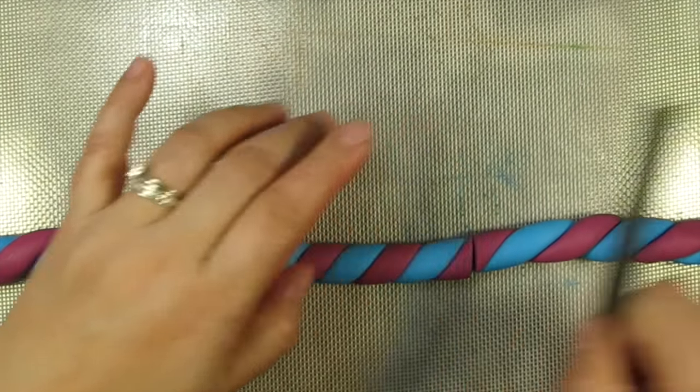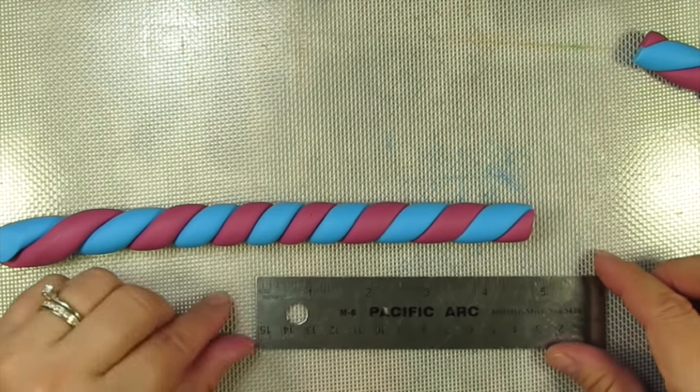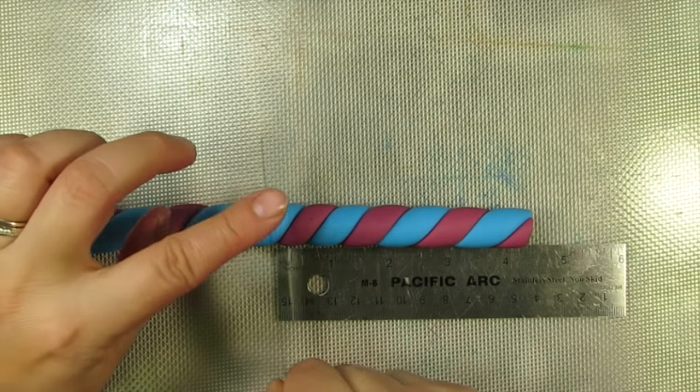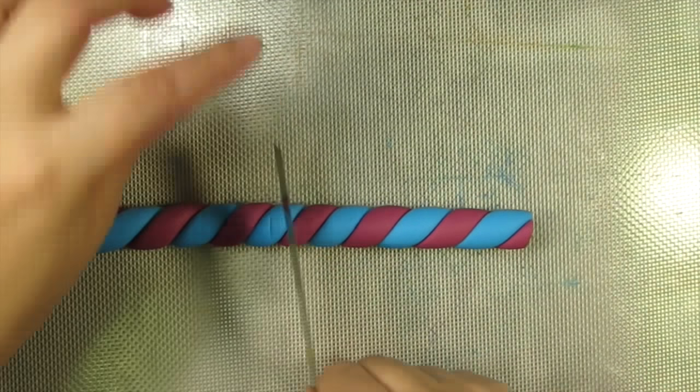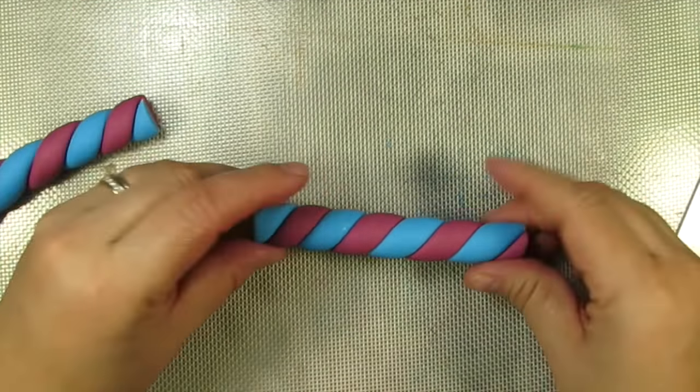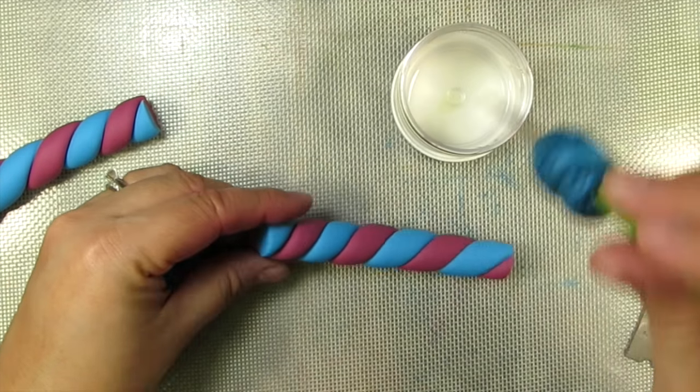I'm going to trim one end with my straight blade. That'll be one of the ends to my candle. Here I'm measuring out my candlestick to about four and a half inches in length. I realized a little bit later on that that was a little too long, so you'll see me make the correction here in a little bit.